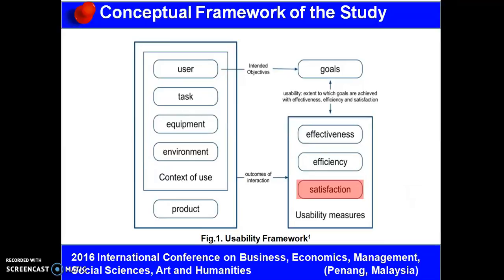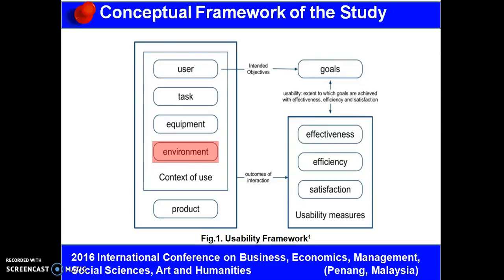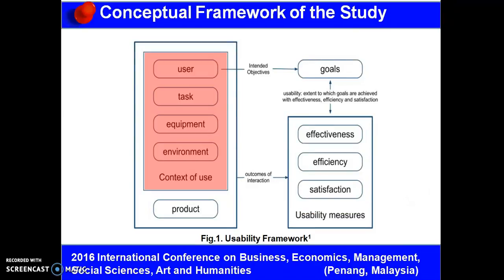According to ISO 9241, a system or a product is dependent on its specific and distinct context of use — i.e., user, task, equipment, and environment. To measure the usability of a system, the three usability goals are measured using appropriate usability metrics. The results of the usability metrics are actually influenced by the context of use or circumstances surrounding the system.